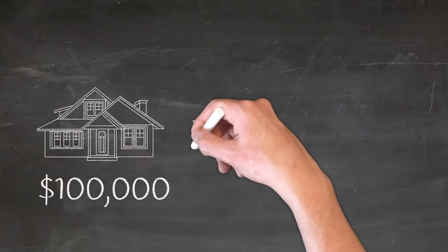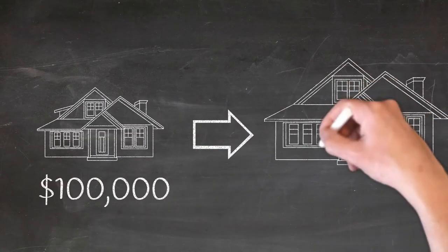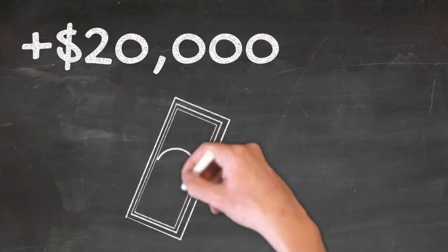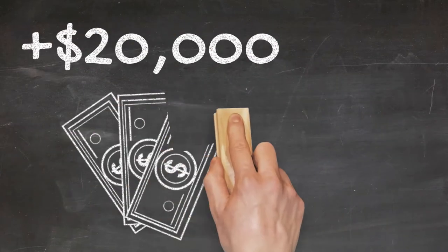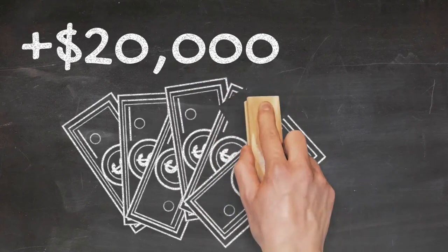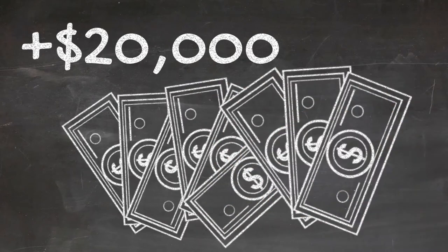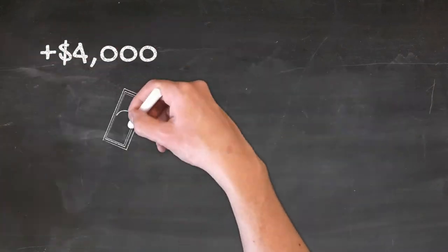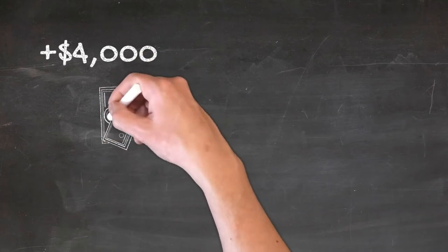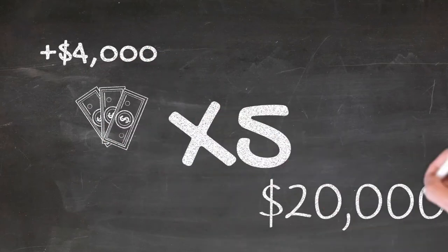Let's assume that your property appreciates by 20% in one year and you decided to sell that property for $120,000, making a $20,000 profit. If you have not taken out that bank loan and instead bought a smaller property worth $20,000, you would have only made $4,000. But because you took on leverage, it has allowed you to earn 5 times more.